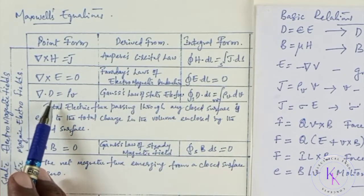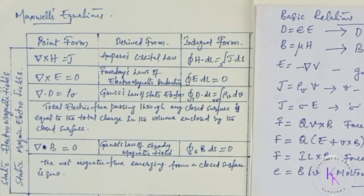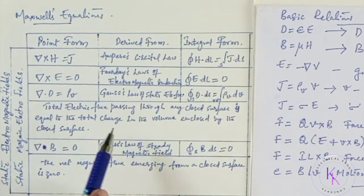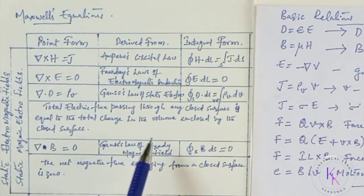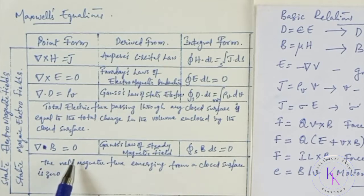Similarly, del dot D equals rho_V, derived from Gauss's law of the static electric field, with its integral form. In words: the total electric flux passing through any closed surface is equal to the total charge in the volume enclosed by that closed surface. And the fourth equation: del dot B equals 0, derived from Gauss's law of the steady magnetic field, with its integral form. In words: the net magnetic flux emerging from a closed surface is zero.